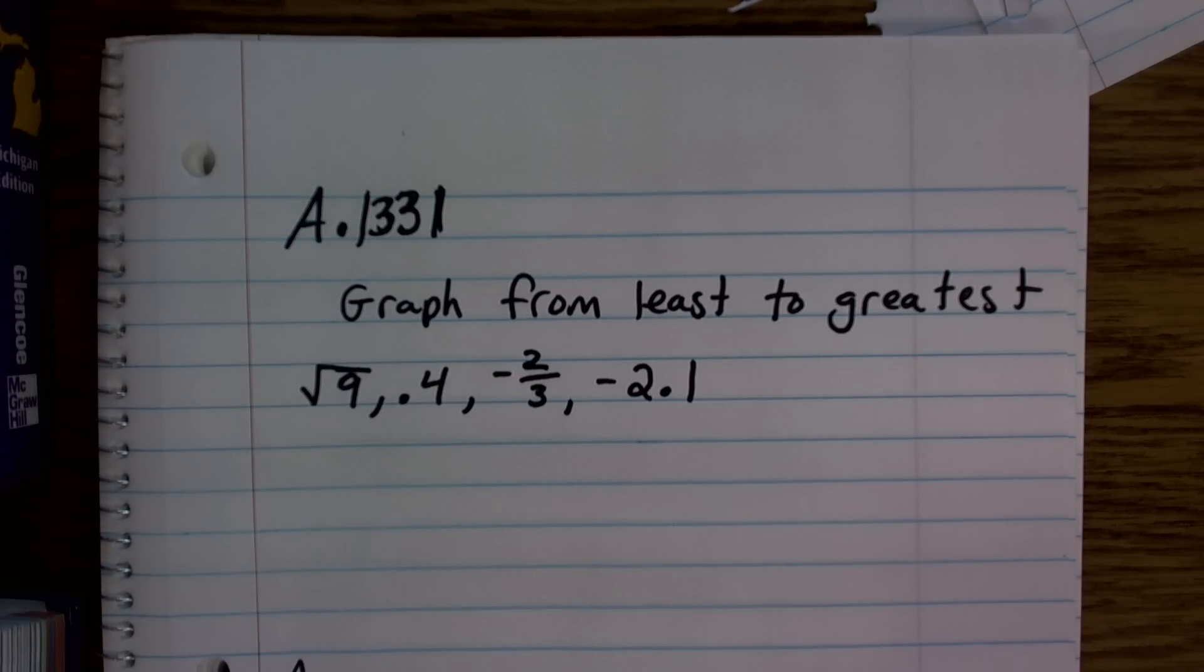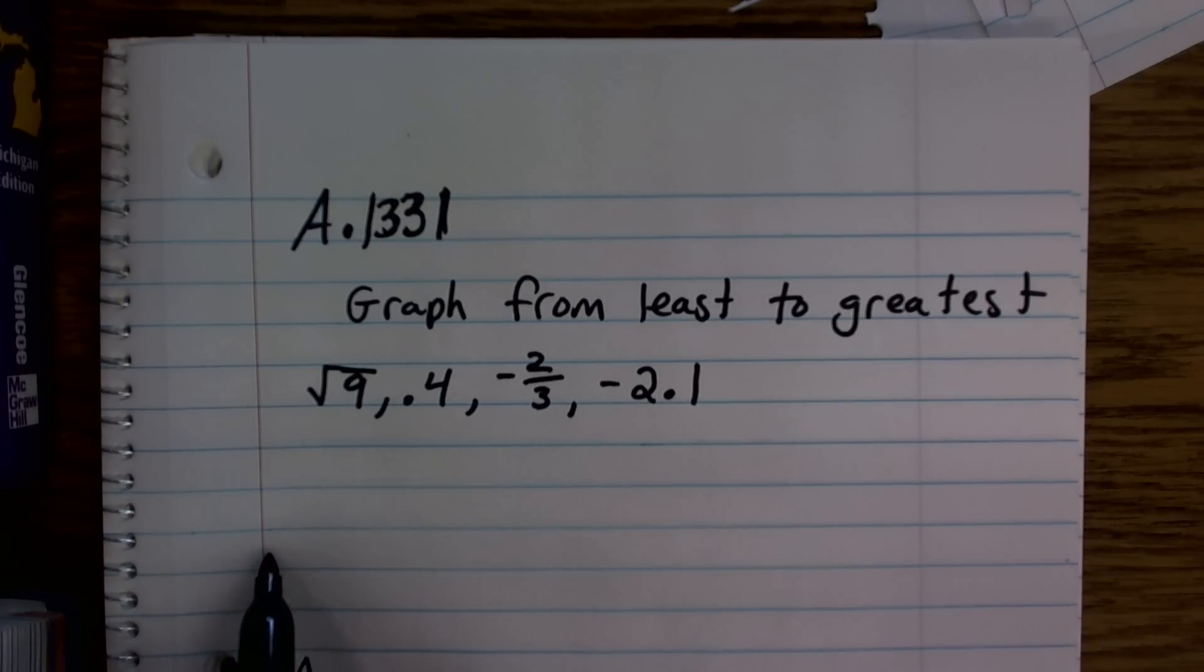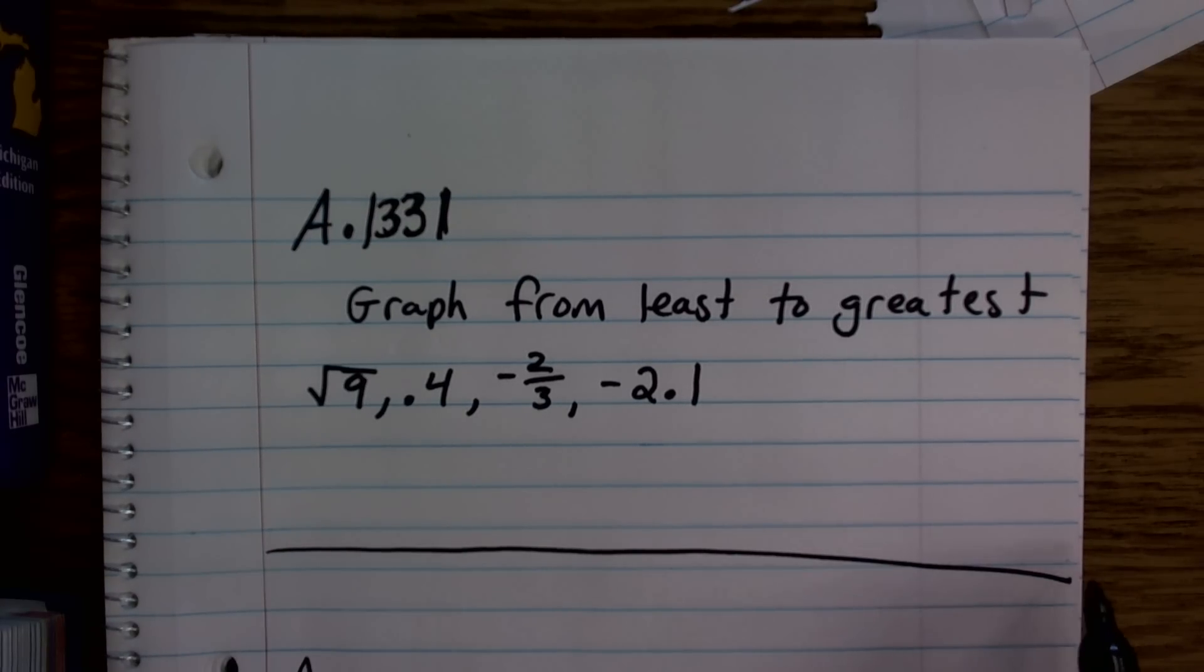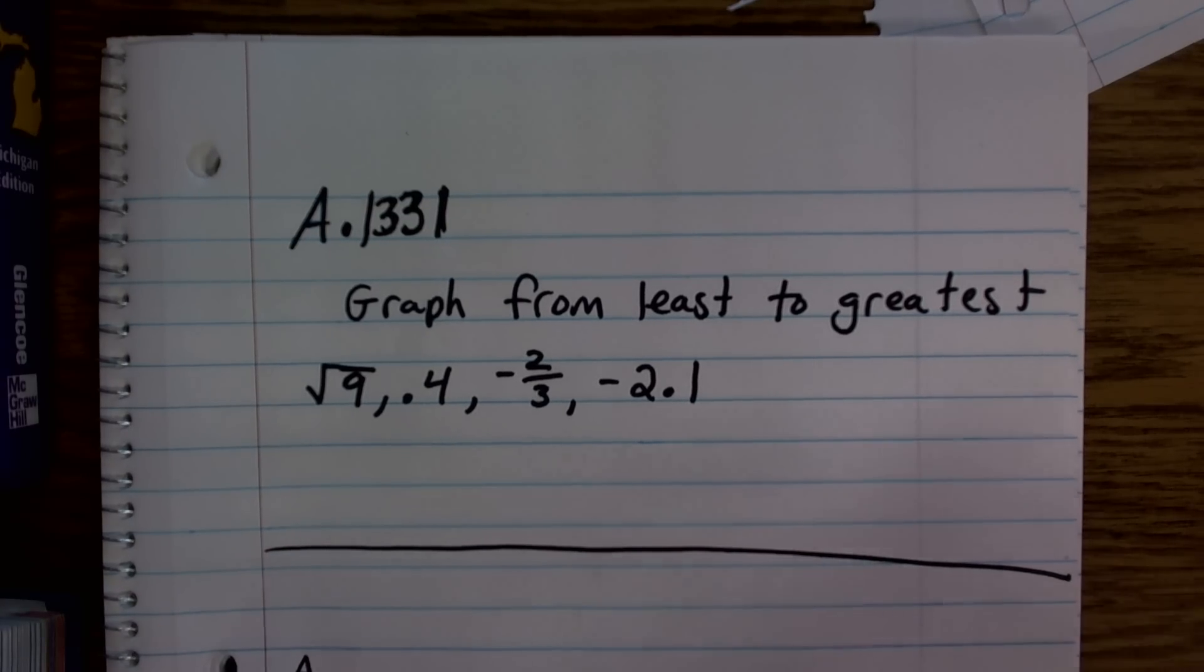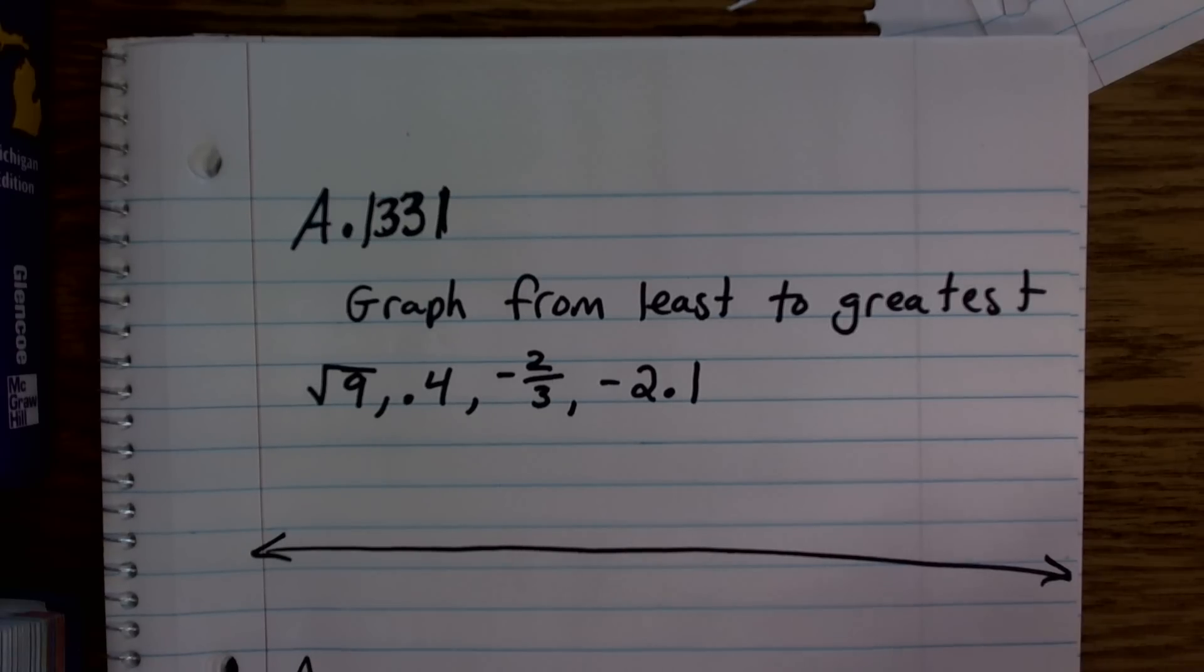So whenever I want to graph from least to greatest, the main important thing that I want to do is simply kind of set them up on a number line. So all a number line is, that's kind of a bad line, but sorry, I'm going to have to work with this. All a number line is, it's just a way for us to kind of classify distances from a point 0.